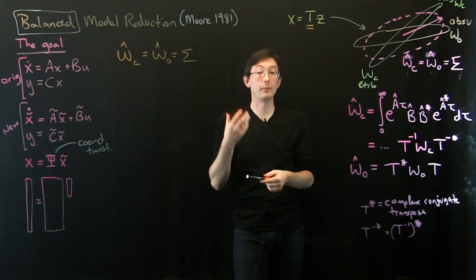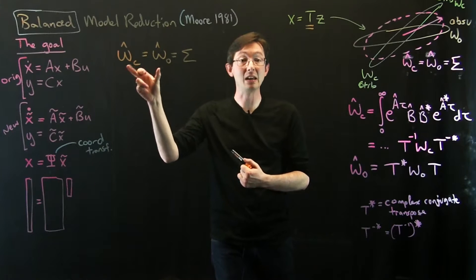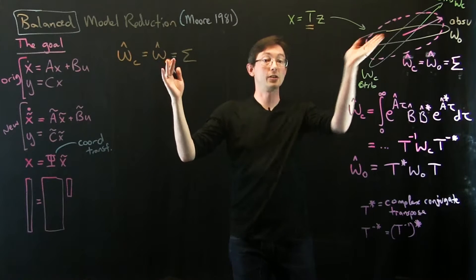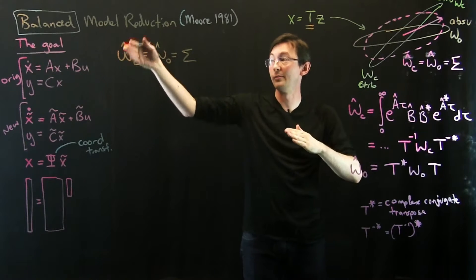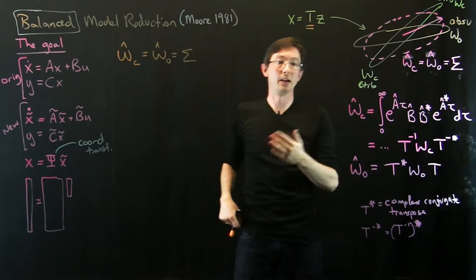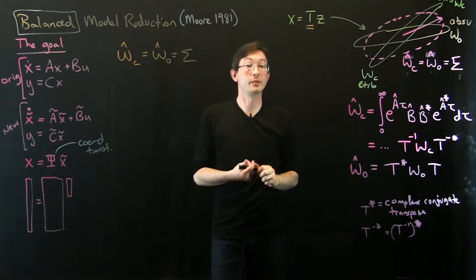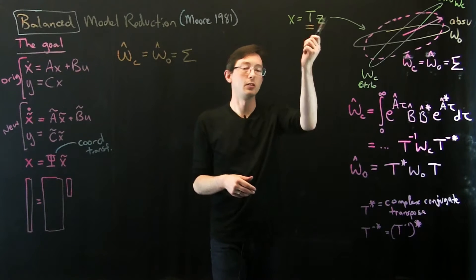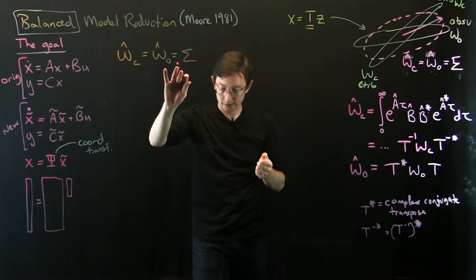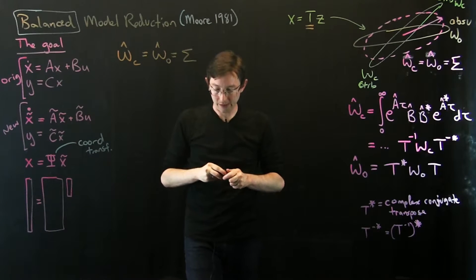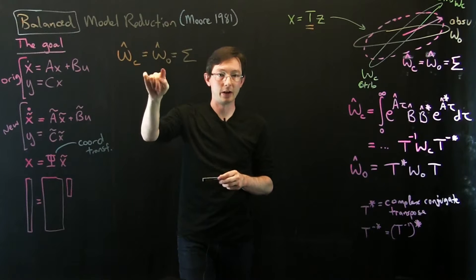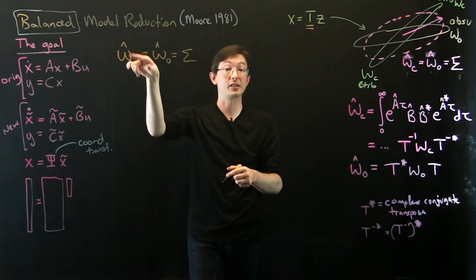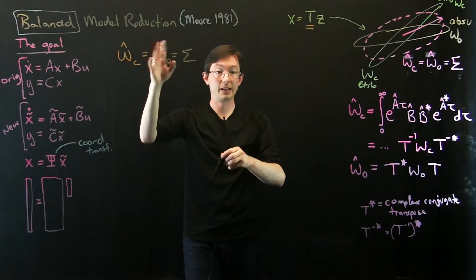Go back to the control boot camp and refresh yourself on what the Gramians mean physically — they essentially tell you what directions in state space are most controllable and observable, with the columns in order from most to least. To find T, I'm going to take the product of these two Gramians and do some math that will give me an expression I can solve for T to get these balanced Gramians.